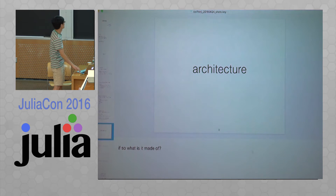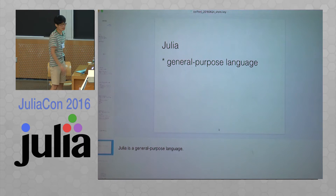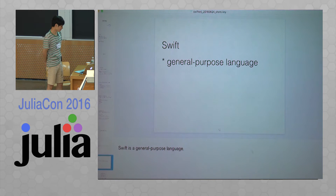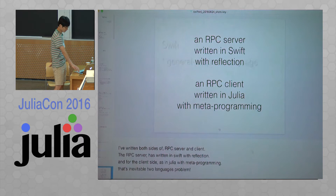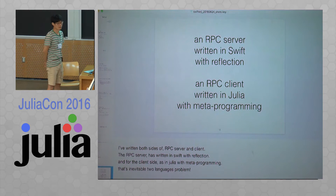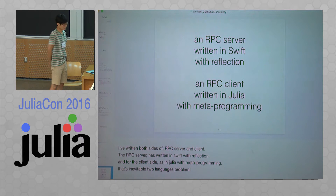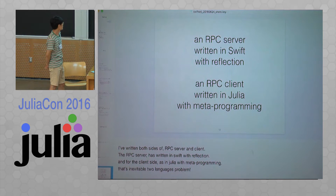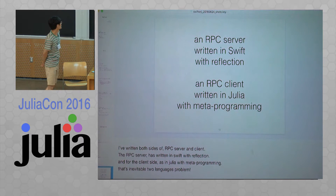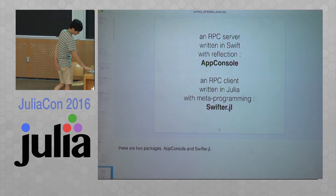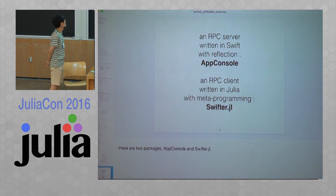So what is it made of? Julia is a general purpose language, and Swift is also a general purpose language. I've written both sides of an IPC server and client. The IPC server is written in Swift with reflection, and the client side is written in Julia with metaprogramming. These are two packages: AppConsole and Swift.jl.